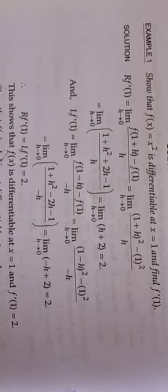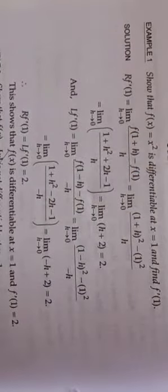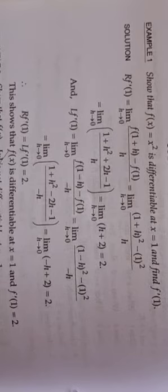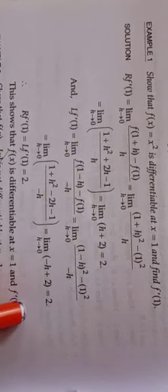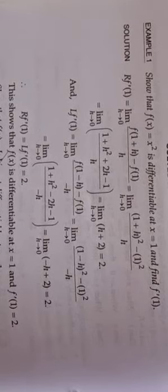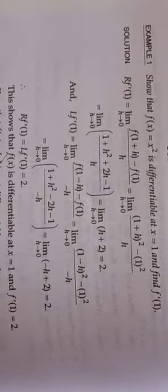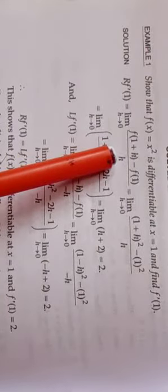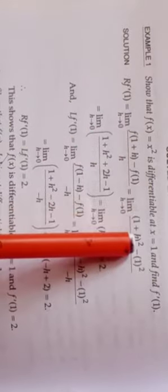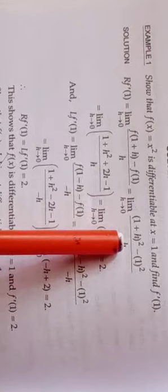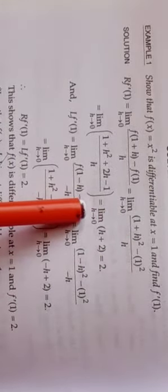For the right-hand derivative, h tends to 0⁺, and for the left-hand derivative, h tends to 0⁻. The left-hand derivative is limit h→0 of [f(1−h) − f(1)] / (−h), which equals limit h→0 of [(1−h)² − 1²] / (−h). Calculating that, we get the result 2. So the left-hand derivative equals the right-hand derivative, both equal to 2.